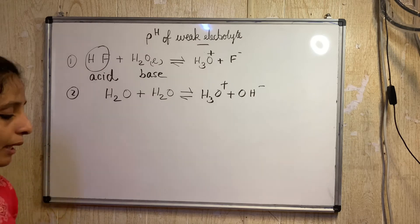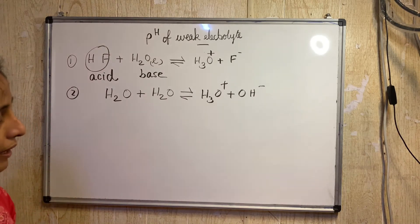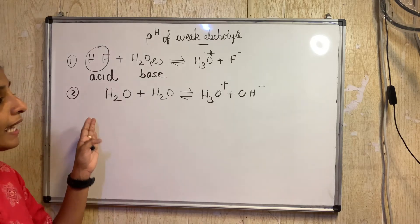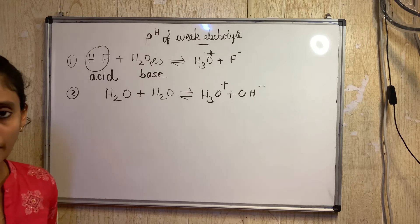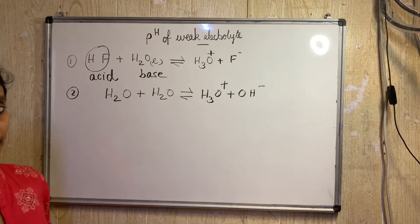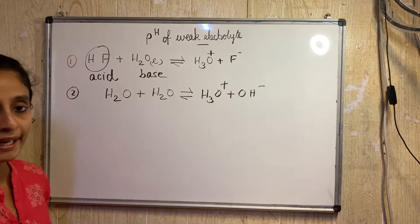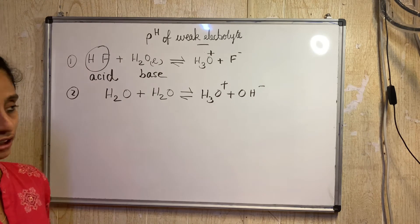What is the third step? The reaction with the higher K is identified as the primary reaction; the other is the subsidiary reaction. We have to identify the primary reaction — the rule is that K with the highest value determines the primary reaction.